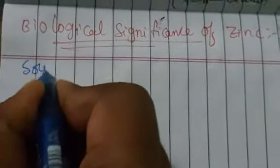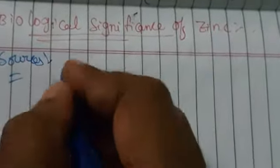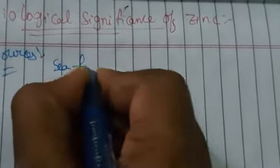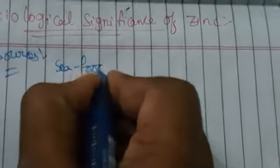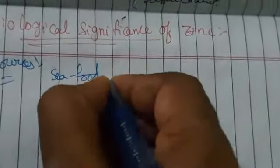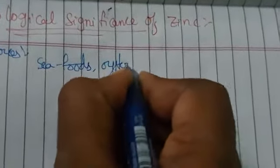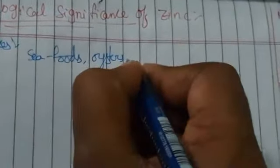What are the sources we need for zinc? The sources required for zinc are seafood, fish, crabs — mainly oysters, which are also seafood — and also liver.